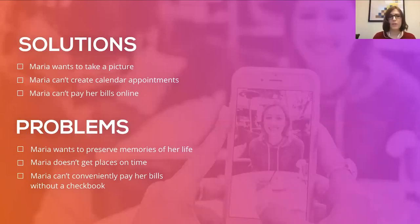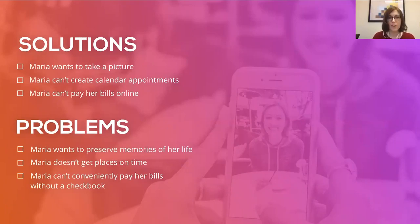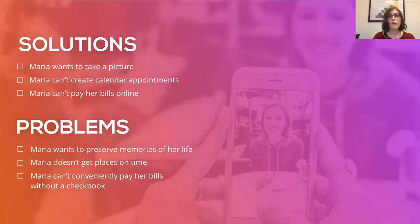If we dig in a bit more and think about what her underlying problems might be — for instance, that she wants to preserve memories of her life — we have a lot more options. We could create something with video, give her a diary, or many other options. Or if she can't get to places on time, we could simply give her a list to write down where she needs to be, or send her alerts rather than going through the whole idea of creating calendar appointments. Getting deep down into what problems our users have is really core to making sure we're building the right thing.